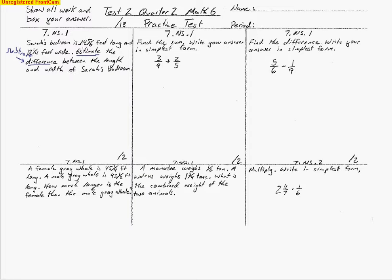We want to find the difference between the length and the width. What we need to do is take those two numbers — 14 and 5 sixths — and subtract 12 and 1 quarter. Now we're approximating these numbers, so we round to the nearest half. If the fraction is really close to one, we round up. In this case, 5 is very close to 6, so we round this up to 15.